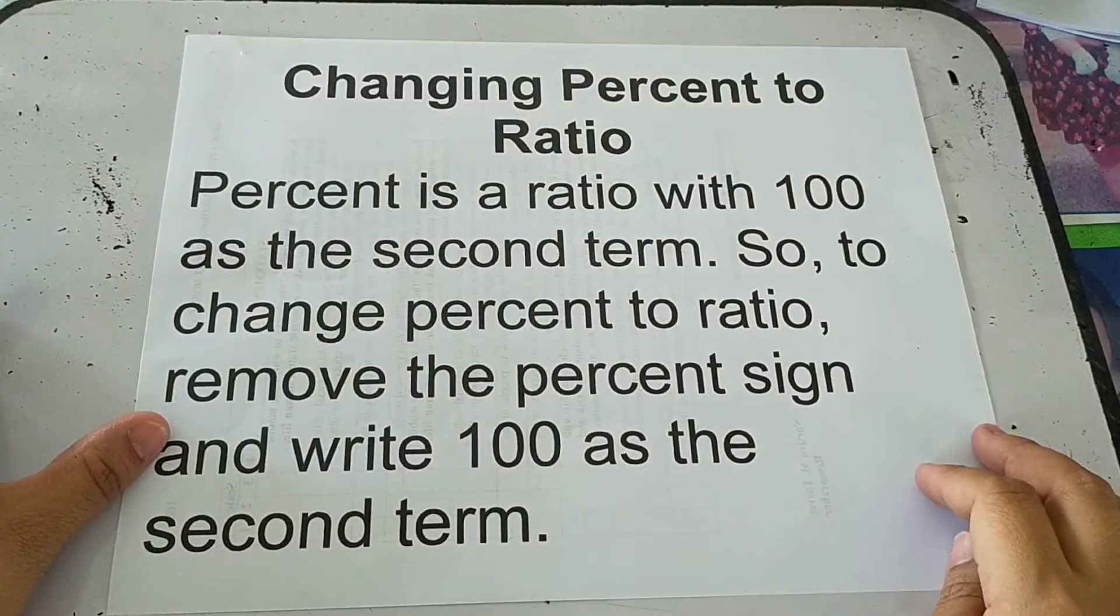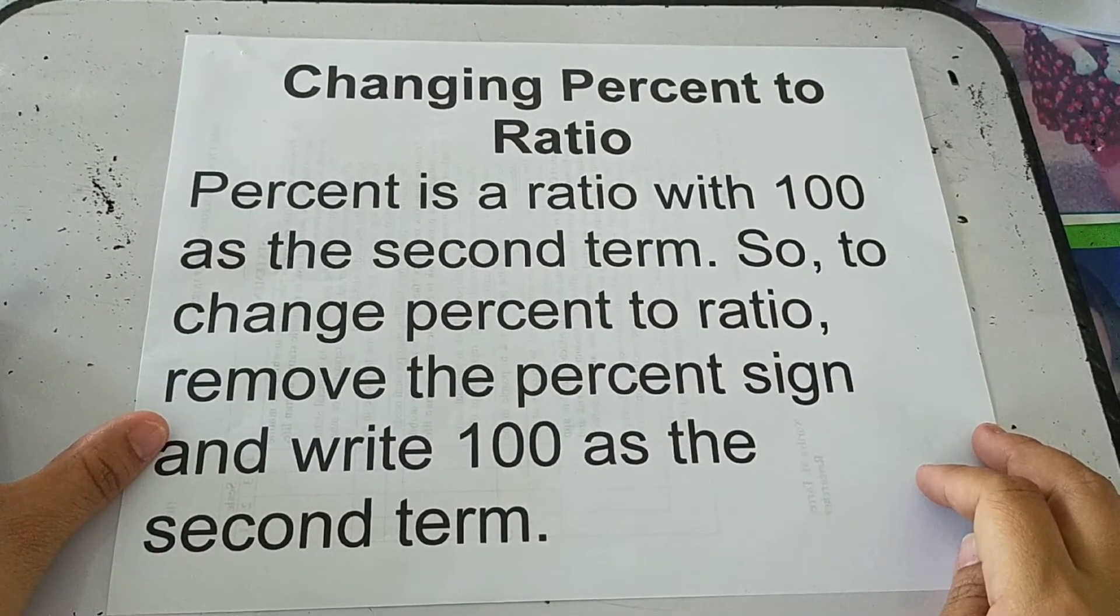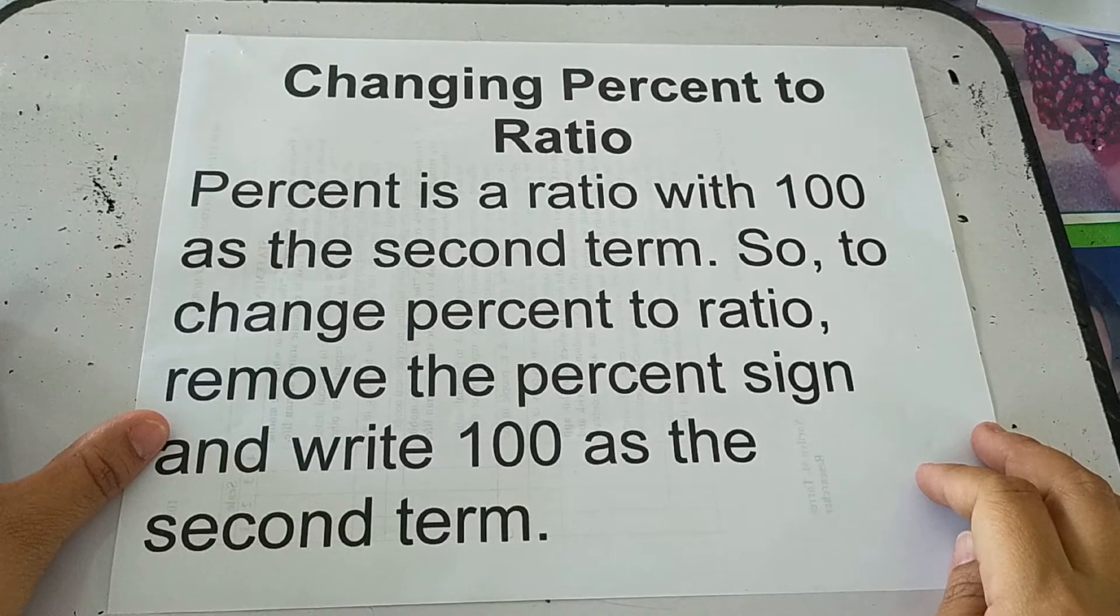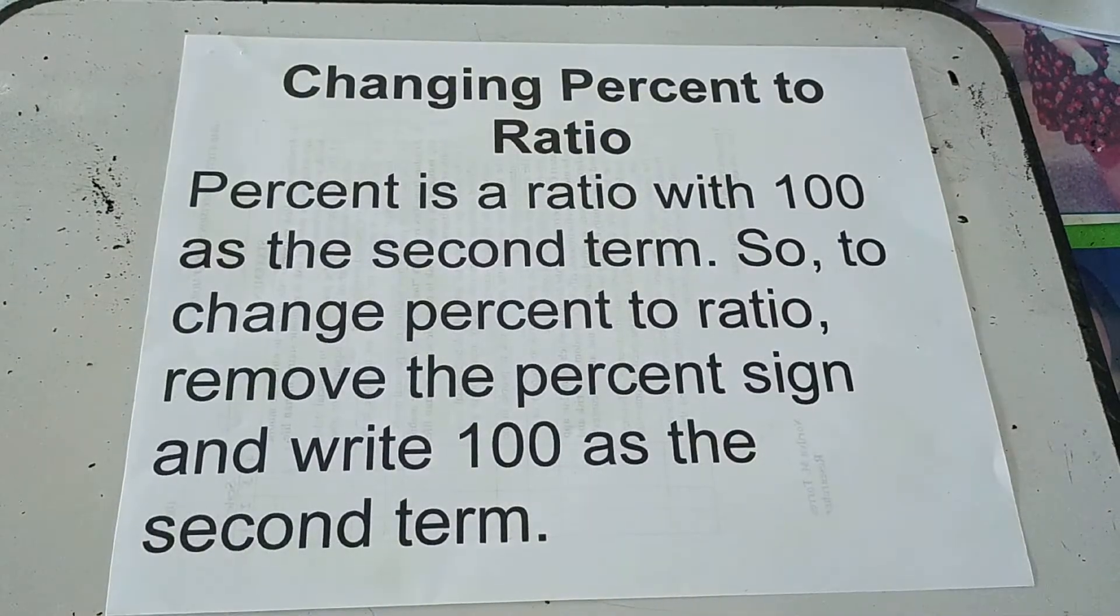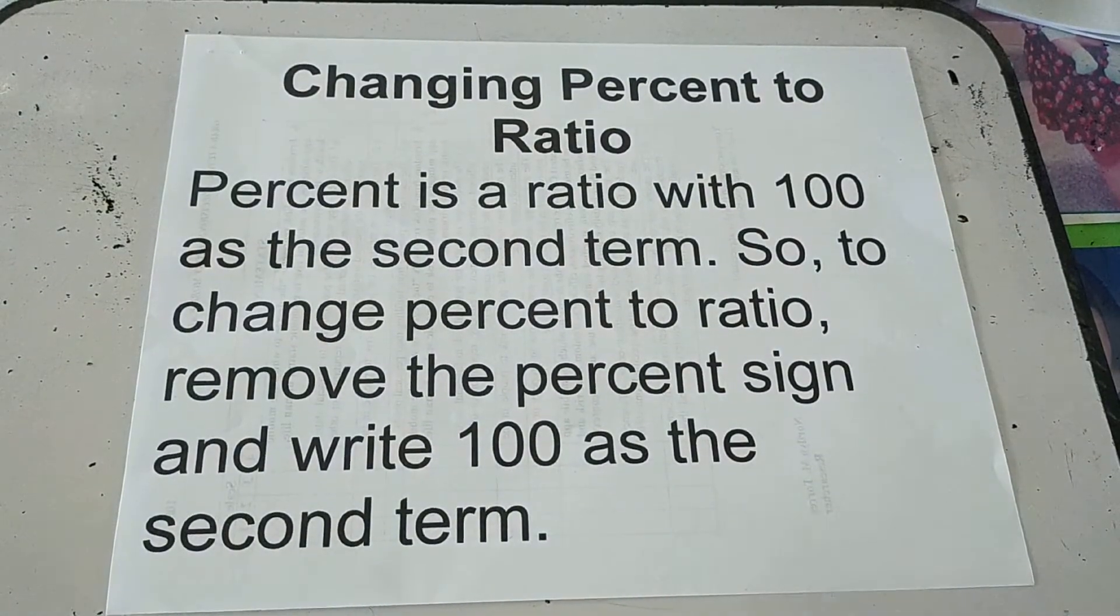Changing percent to ratio. Percent is a ratio with 100 as the second term. So to change the percent to ratio, remove the percent sign and write 100 as the second term.